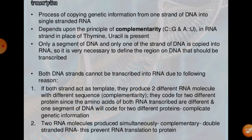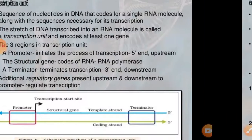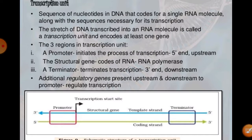The transcription unit in DNA is defined by three main regions: the promoter, the structural gene, and the terminator. These three components govern how the transcription unit is formed.